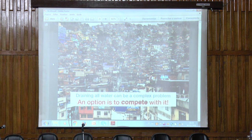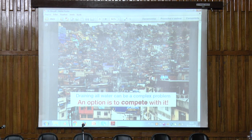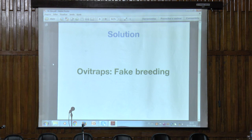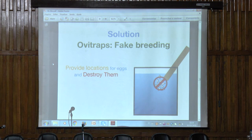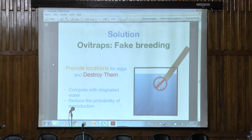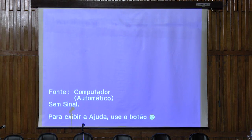So an option, rather than trying to get all of those locations, is to compete with those locations that we cannot control. How do we compete with them? By setting traps. These traps are called ovitraps. They are based on providing a location that is very comfortable and nice for the mosquito to come and lay eggs, and then we destroy the eggs ourselves. This strategy is based on competing with those locations of stagnated water that we cannot control, reducing the probability of successful reproduction because part of the breeding is going to take place in locations that we are controlling. By reducing this probability, we can reduce or even collapse the population.